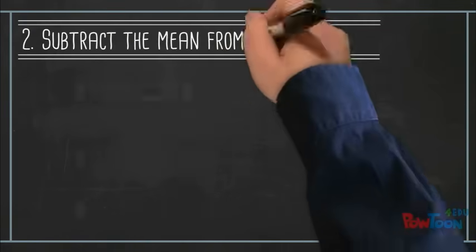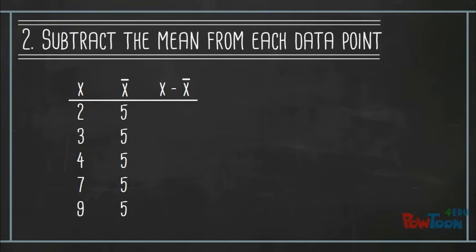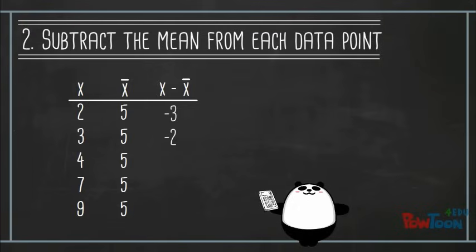The second step is to subtract the mean from each data point to find the differences. It's helpful to use a table like this. 2 minus 5 equals negative 3, 3 minus 5 equals negative 2, 4 minus 5 equals negative 1, 7 minus 5 equals 2, and 9 minus 5 equals 4.